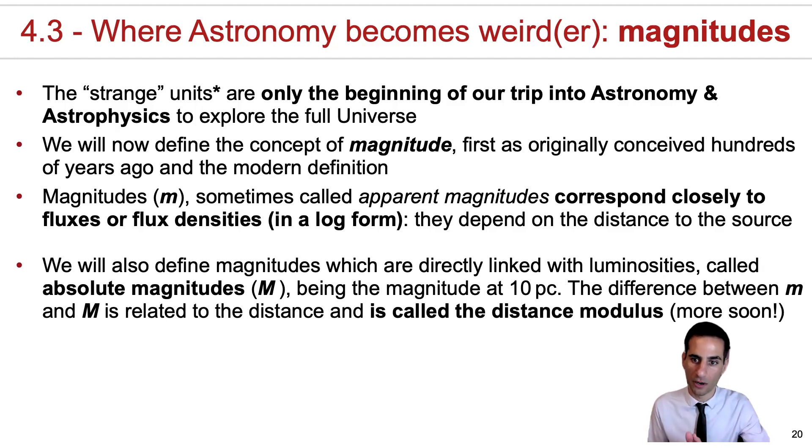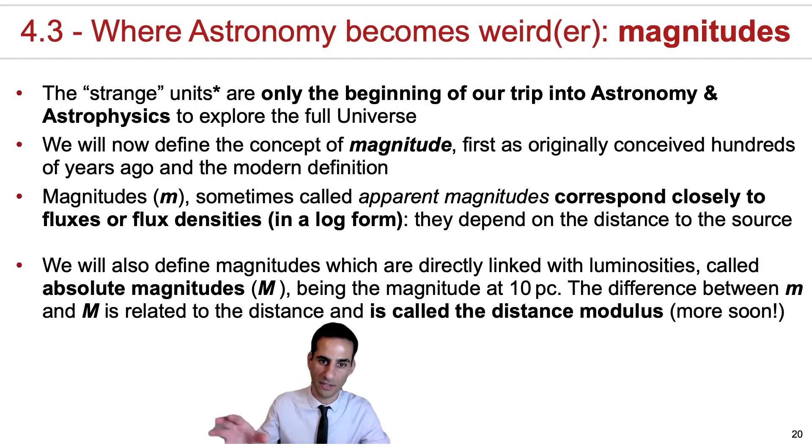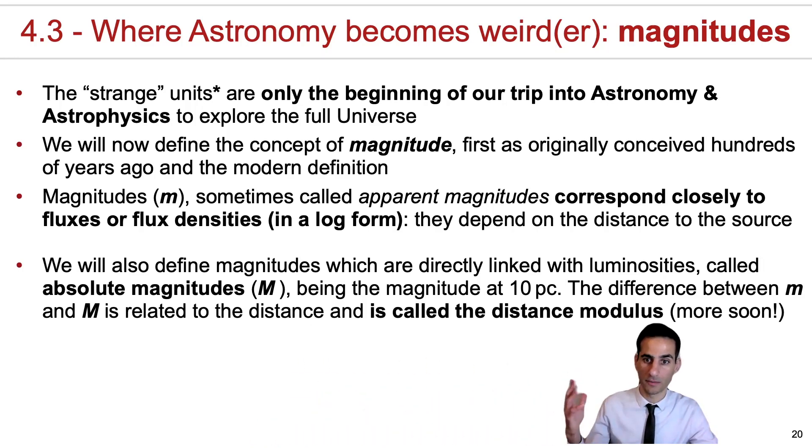This means that magnitudes depend on the distance to the source. If you are further away from the same source, the magnitude will actually be fainter than if you're close to it. That is the reason why we'll also define other kinds of magnitudes, which are called absolute magnitudes with a capital M. They are defined as being the apparent magnitude as if we were to place the source 10 parsec away. The difference between the apparent magnitude and the absolute magnitude is related to the distance, and this is what in astronomy we call the distance modulus.